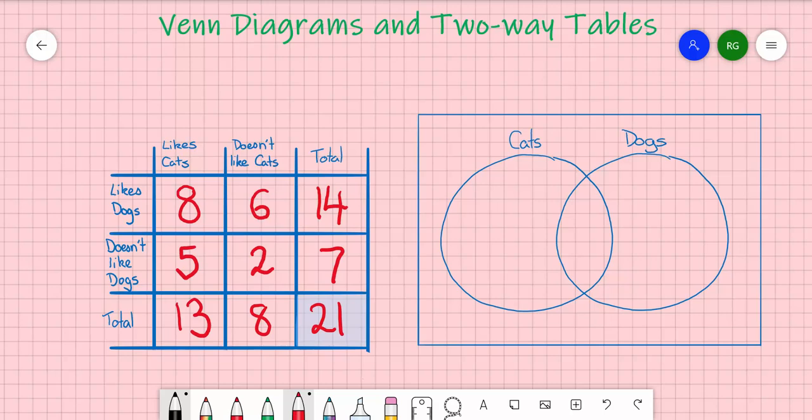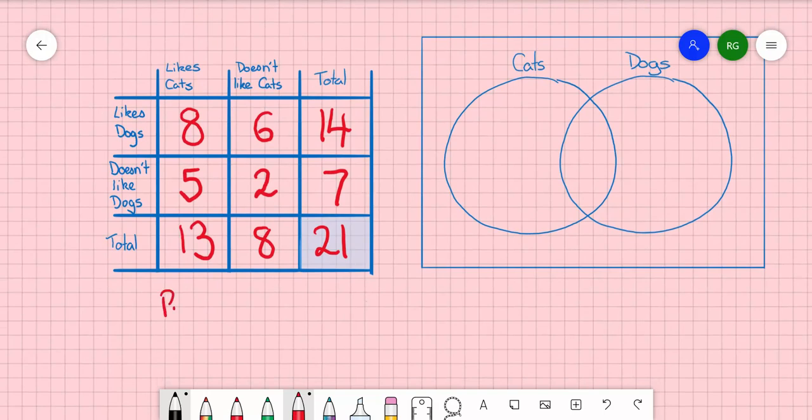Using this method, we can do some probability questions, like, what is the probability that someone likes cats? The probability of someone liking cats is this. We'll write out probability like cats is equal to the number of people that like cats, which is 13, divided by the total number of people, which is 21. So we can't simplify that. That is the probability that someone in this class likes cats.